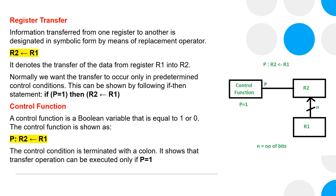Control Function: a control function is a Boolean variable that is equal to 1 or 0. The control function is shown as p. The control condition is terminated with a colon. It shows that the transfer operation can be executed only if p equals 1.